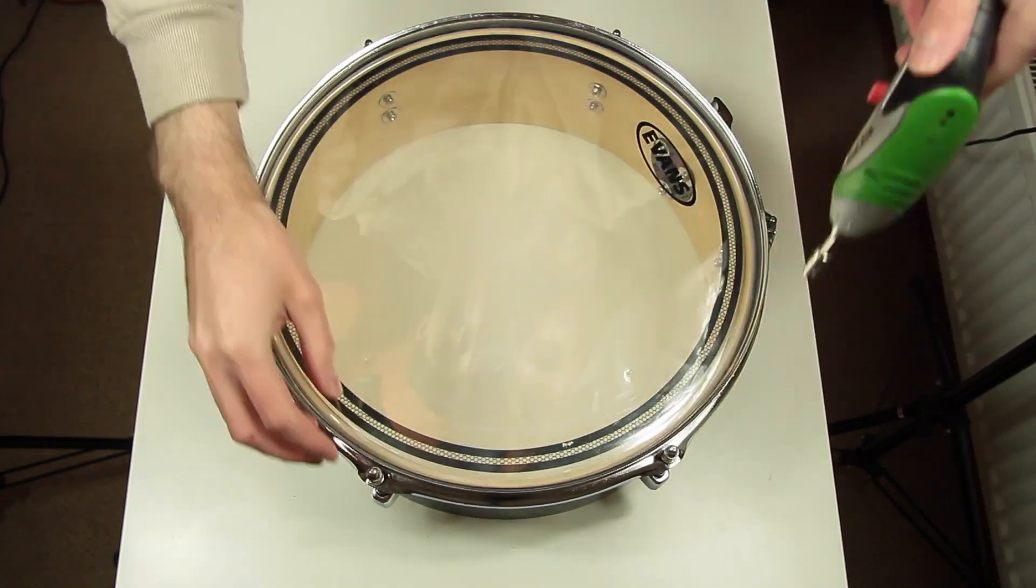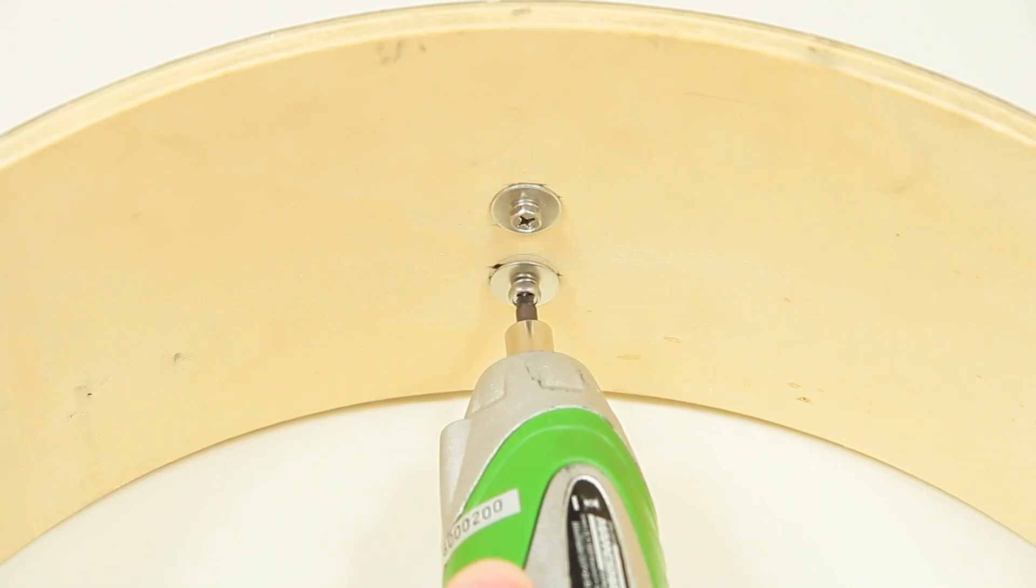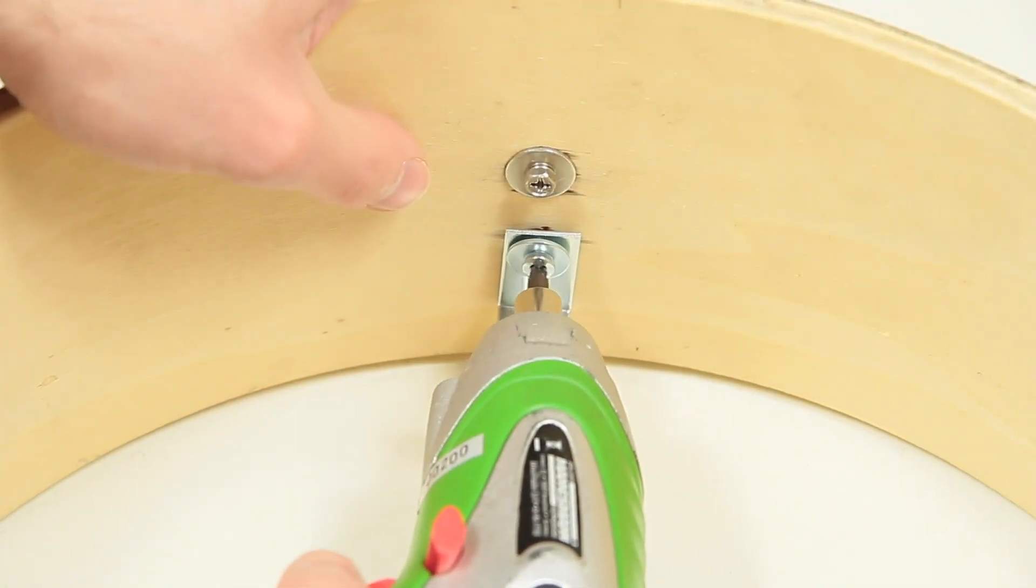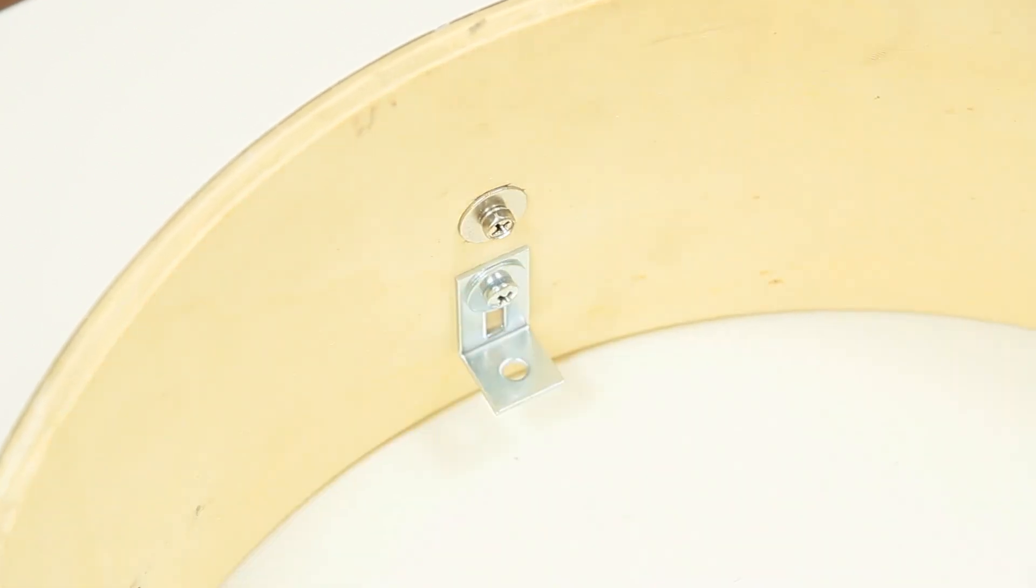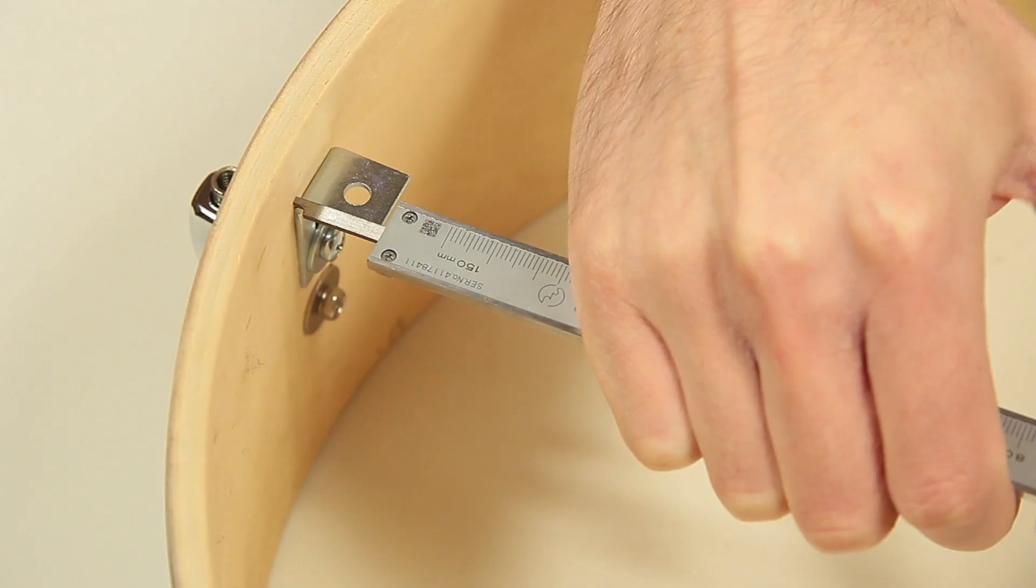First we will remove head and rim. We take off the lug screw and the second one at the opposite to attach two of the angles. We use M4 screws with big washers. The original screws are too short. It is really important to measure the exact distance between the holes.